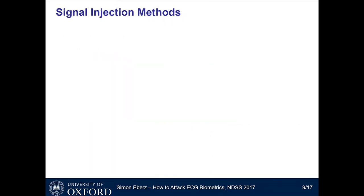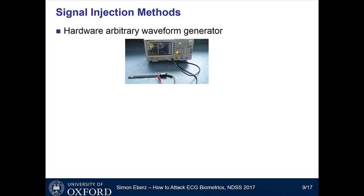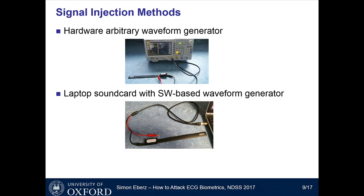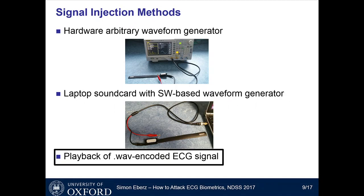Once we have this data, it has to get back into the NYMI band. Since ECG is simply an electrical signal, we first used an arbitrary waveform generator attached to the NYMI band to load and play back the ECG signal — though this is bulky, expensive, and noisy. Our second approach used a laptop sound card as a software-based waveform generator. Our final and preferred approach encodes the ECG signal as an audio file and plays it back using any off-the-shelf audio player, putting the total cost of the attack at about $20 for a cheap MP3 player and a cable from Amazon.